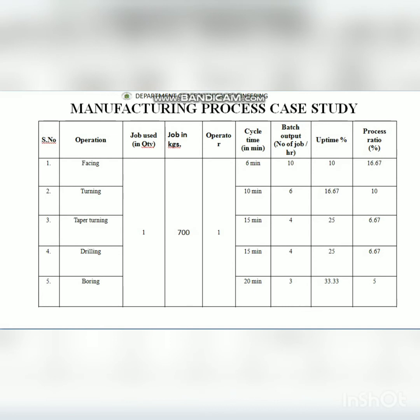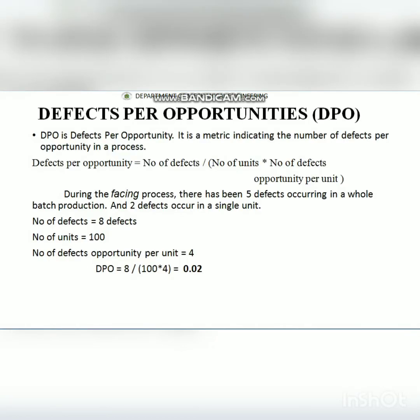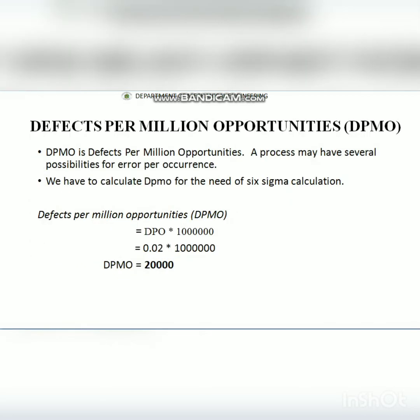Once we find the process ratio in a particular cycle in minutes, we correlate uptime and process ratio. For example, we get 10 minutes for facing; as uptime increases, the process ratio decreases. We then find the yield quantity and implement it as Defects Per Opportunity (DPO), which is then applied to calculate Defects Per Million Opportunities (DPMO).